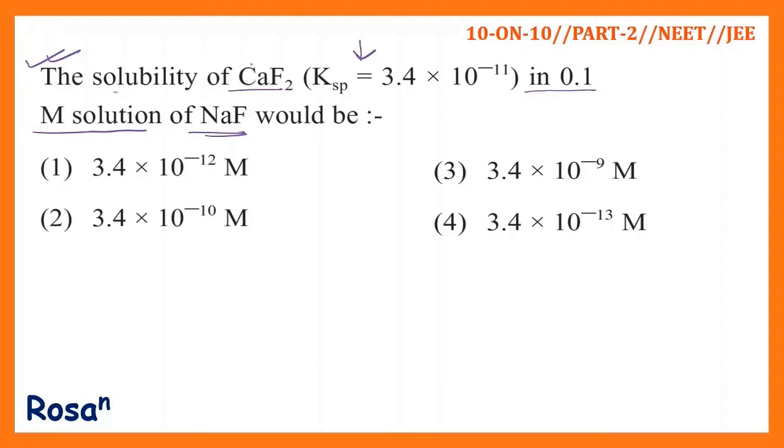Now, CaF2 is a weak electrolyte, so it dissociates as Ca2+ plus 2F-. That is clear. And NaF is a strong electrolyte, so it completely dissociates into Na+ plus F-.